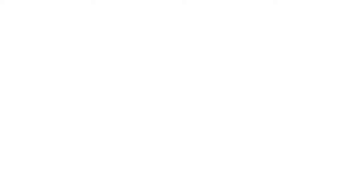Number 5: Wait for the mouse to fall in. The mouse will run up the ruler to reach the food on the opposite side of the coffee can, then fall into the can when the apparently solid surface gives way beneath it. You'll know the trap has been sprung if you see the bait you laid is no longer there, or if the construction paper has been partially torn. Check the can for the mouse. Remove the ruler or makeshift ramp from the can and take the can to a location about 5 to 10 miles from human habitation. Place the can on the ground and turn it sideways, allowing the mouse to exit.